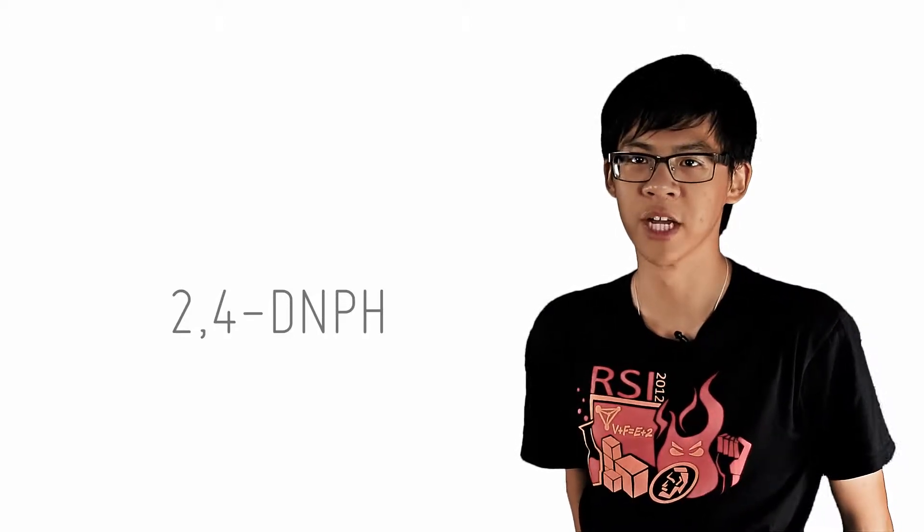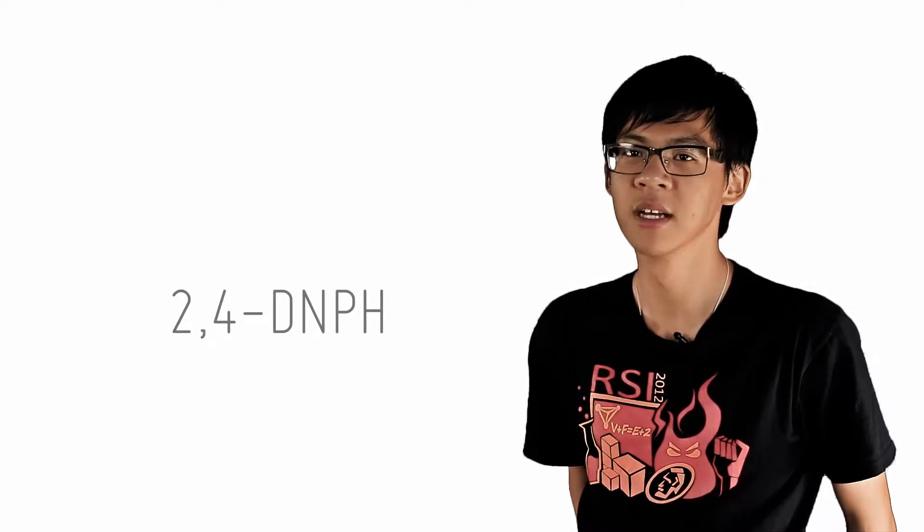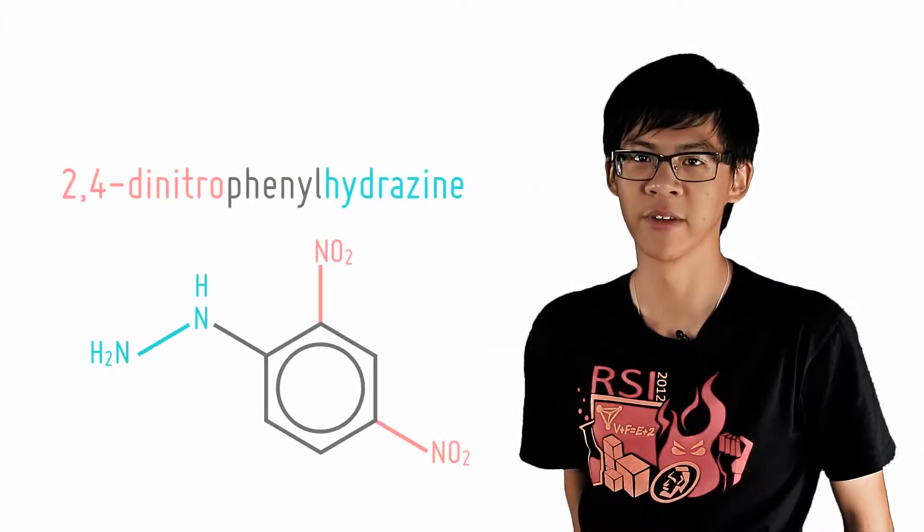There is actually an important distinguishing reagent for all carbonyl compounds, and we call this reagent 2,4-DNPH. Now this is short for 2,4-dinitrophenylhydrazine.